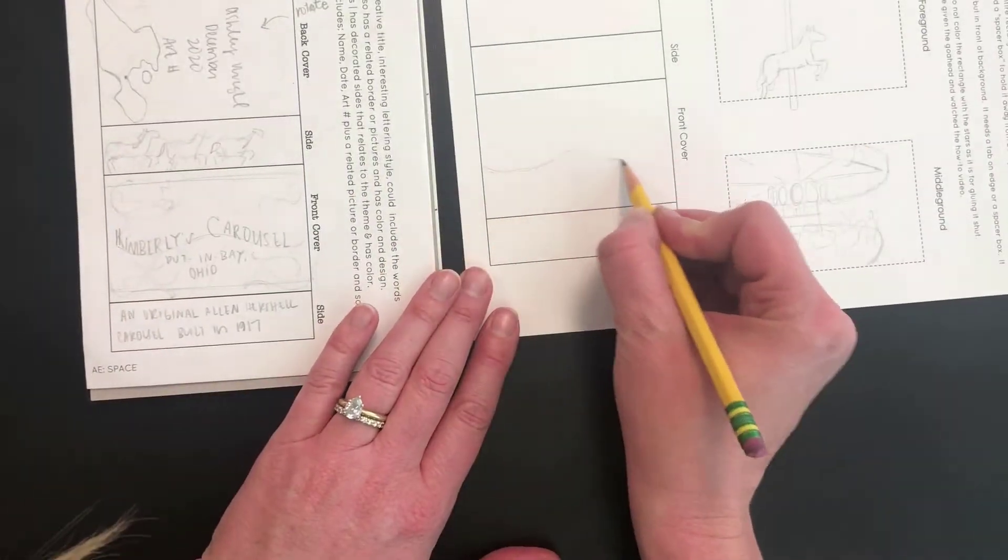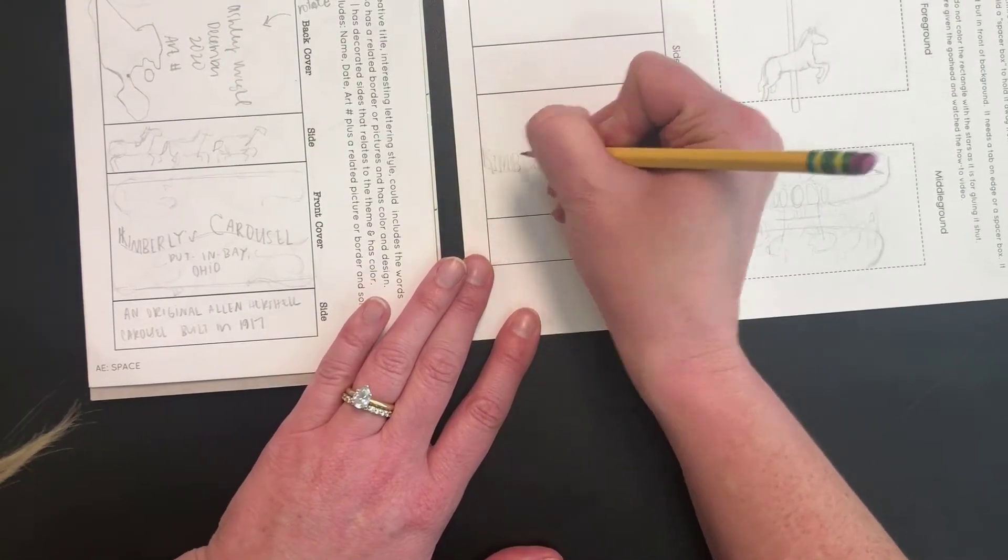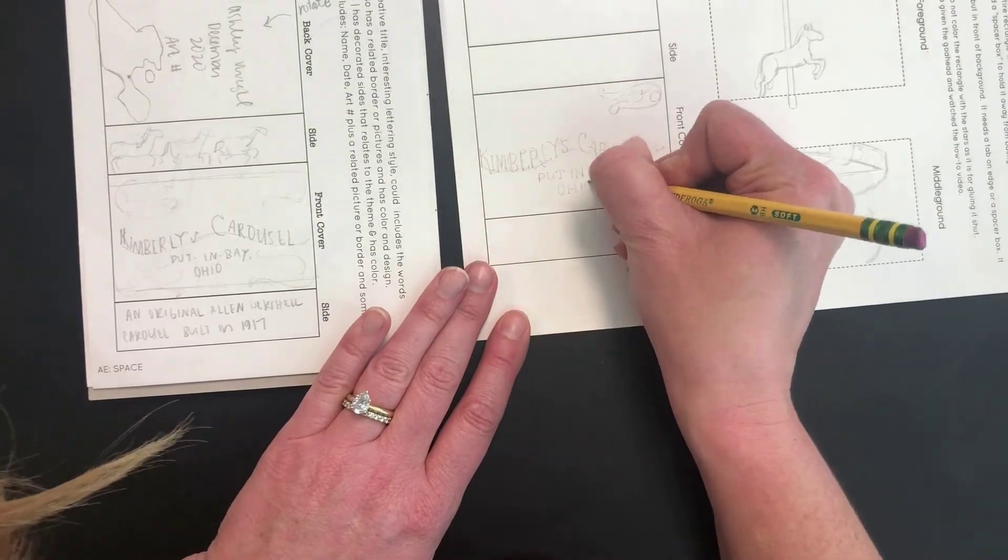For the front cover, you could have a creative title, interesting lettering style. It could include the words pocket box. It also has some kind of related border, pictures, drawings, color, and design.